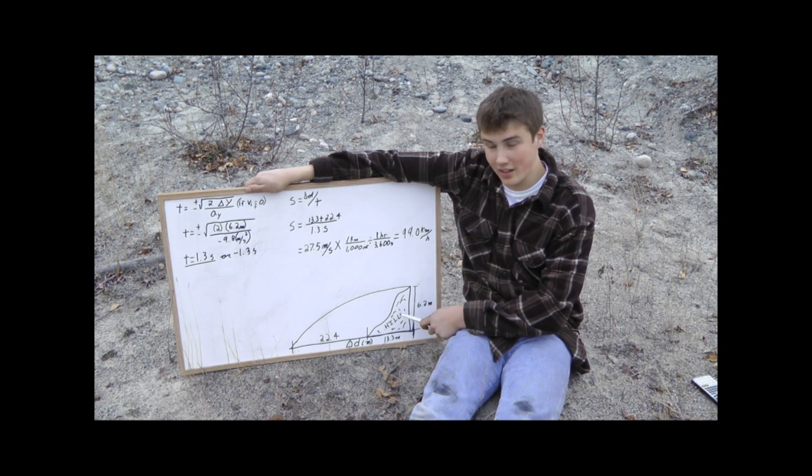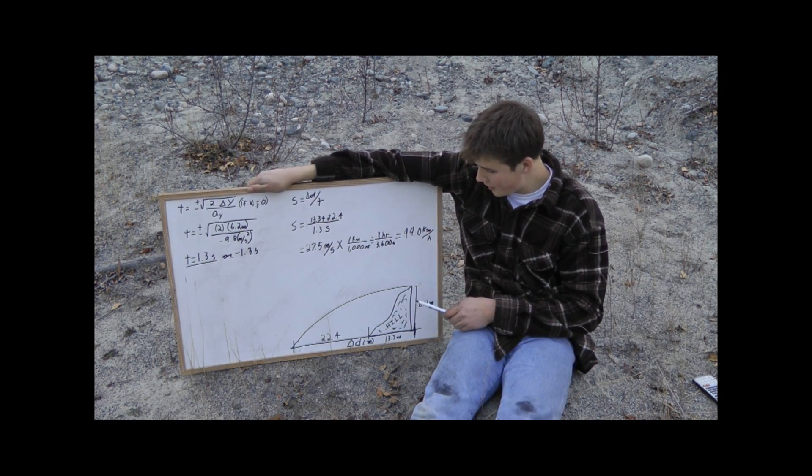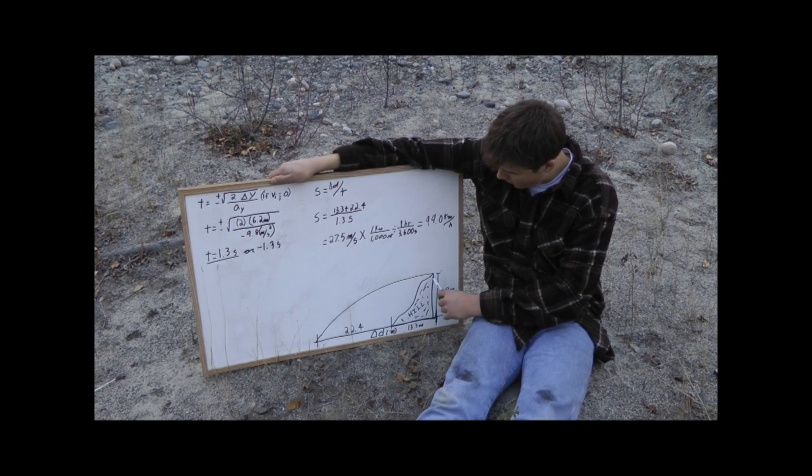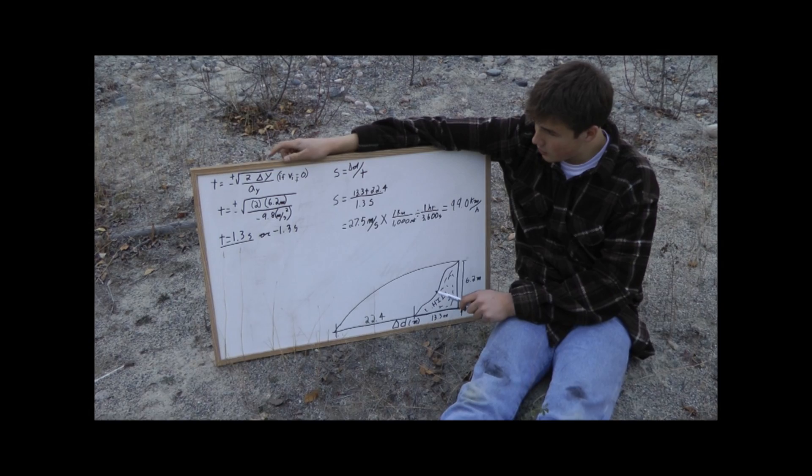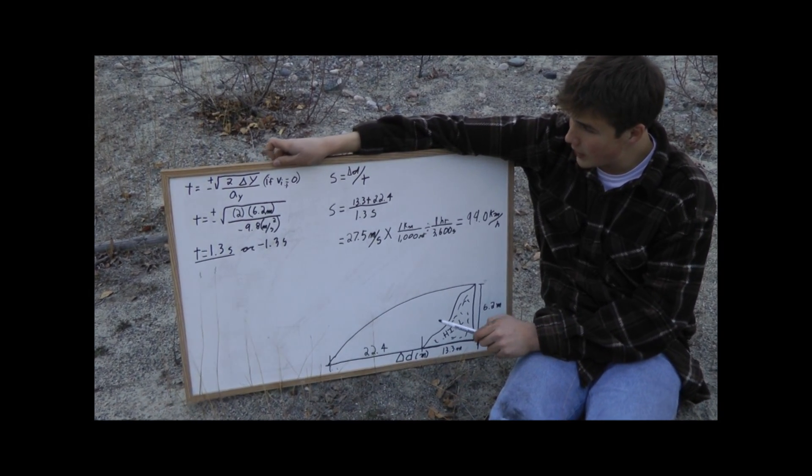So here's the diagram of our hill and we calculated the values of the height and its length using our other diagram. So to find the time it takes to fall this distance we can use this formula here. T equals plus or minus the square root of 2 delta y over acceleration in the y.